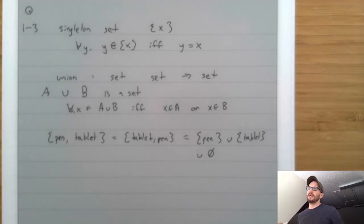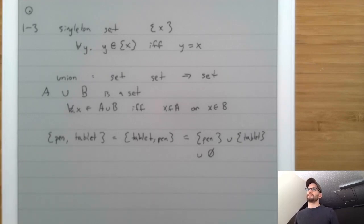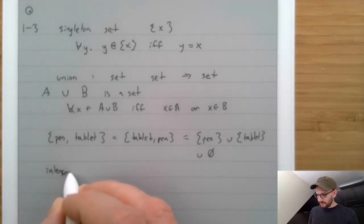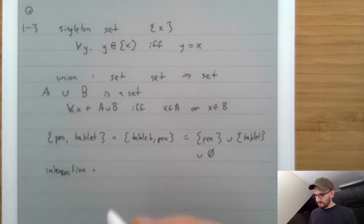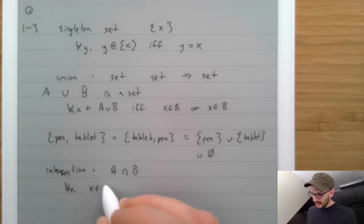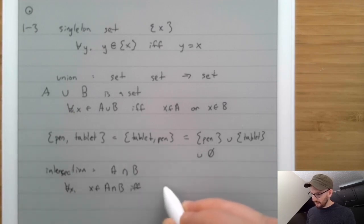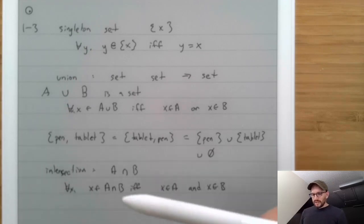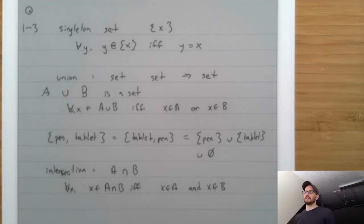There are a large number of other operations that are useful when talking about sets. For example, there's also the operation intersection, which takes the idea of 'and' and puts it inside of a set. We write it as A ∩ B, which is sort of like an upside-down U. And for all x, x ∈ A ∩ B if and only if x ∈ A and x ∈ B. So this is yet another way of constructing a set. We can construct sets by taking the empty set, singletons, unions, and intersections.